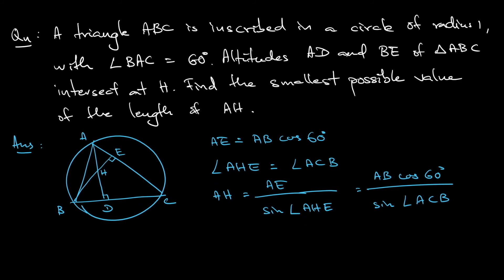Since we have AB divided by sine of angle ACB, if you go back to look at the bigger picture ABC, it's a triangle inscribed in a circle. So AB divided by sine of angle ACB, by sine rule, this would be equal to 2R, whereby R is the radius of the circle. It's given that the circumradius is 1. So basically this is just 2.